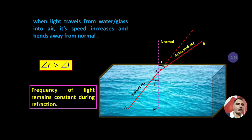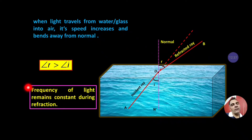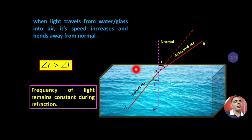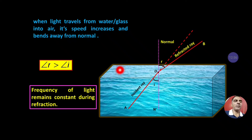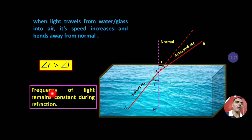In the case of refraction, the frequency of light remains constant during refraction — frequency is a physical quantity that stays constant. When a ray of light travels from one medium to another medium, the intensity of light may change, and the speed changes. The wavelength of light also changes, but the frequency remains constant — frequency does not change.